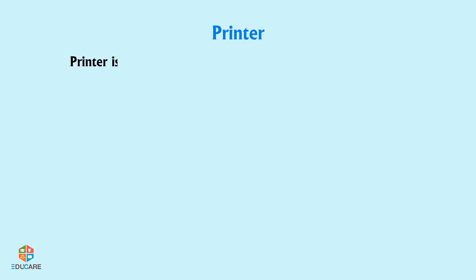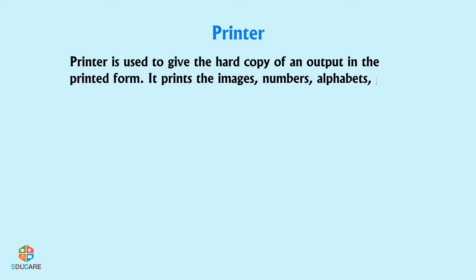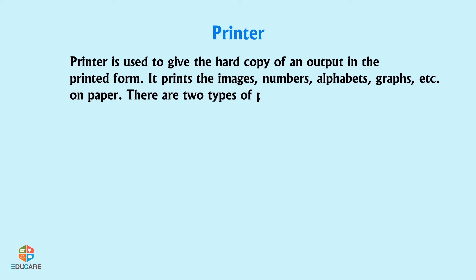Printer: A printer is used to give a hard copy of output in printed form. It prints images, numbers, alphabets, graphs, etc. on paper. There are two types of printers: Impact printers and Non-impact printers.